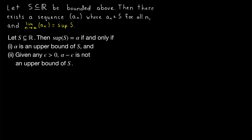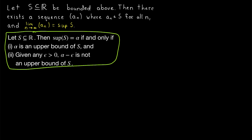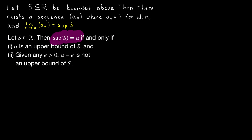When I say the set contains a sequence, I mean that loosely — the sequence consists of terms that belong to the set. This is a nice proof because it's straightforward, but we get to use two nice tools. First, we'll need the epsilon definition of supremum — I'll leave a link in the description to my lesson proving its equivalence to the original definition. This alternative definition tells us that since the supremum is the least upper bound, subtracting any positive number from it gives something that can't be an upper bound. We'll also use the sequence squeeze theorem, and I'll leave a link to that lesson as well.